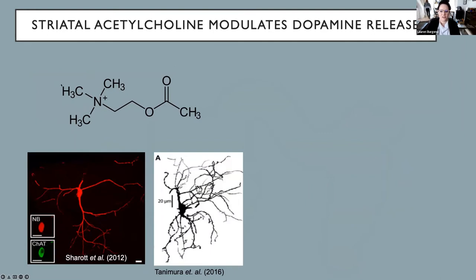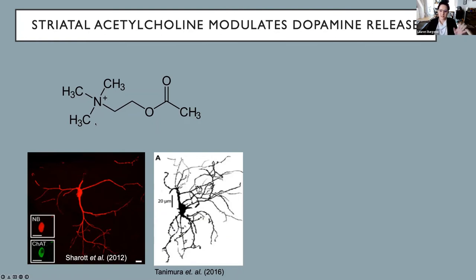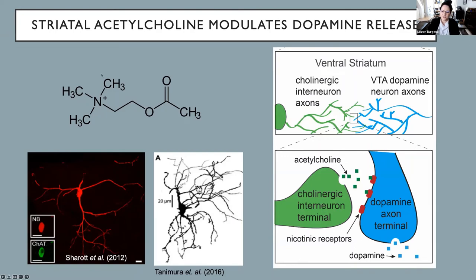Like dopamine, acetylcholine is a neurotransmitter released by a subset of neurons in the brain. Acetylcholine in the striatum is supplied by a small population of cholinergic neurons — tonically active cells that at baseline are constantly firing at low frequency. Because they have enormous, highly branched axonal projections, they blanket the entire striatum and bathe it in acetylcholine. Their terminals are intertwined with the similarly branched dopamine axon terminals, and importantly, dopamine axon terminals express nicotinic acetylcholine receptors — this enables acetylcholine to find and regulate dopamine release.